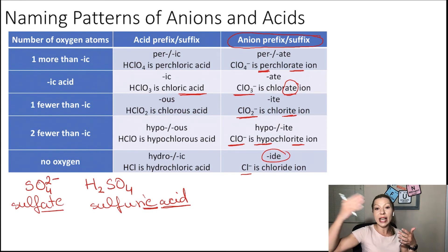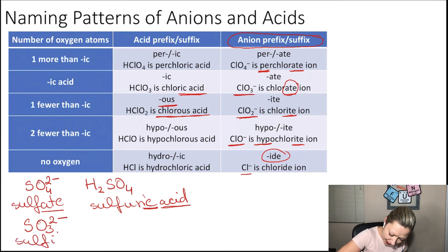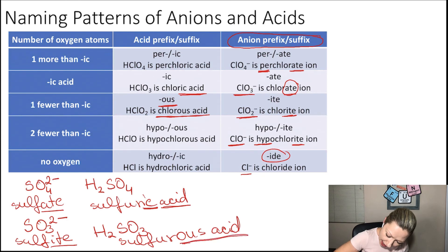What happens if we go to the -ite ion, which has one less oxygen? In that case, we have to use -ous as our suffix. So with chlorite ion, I'm going to end up with chlorous acid. And if I have SO3 2-, which is the sulfite ion, then my acid, the H2SO3 acid, is going to be the sulfurous acid.